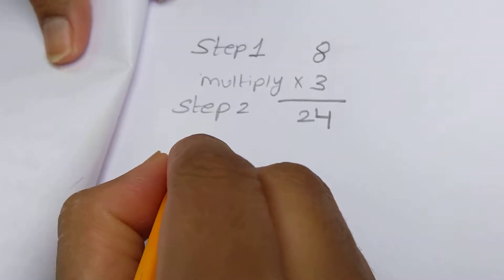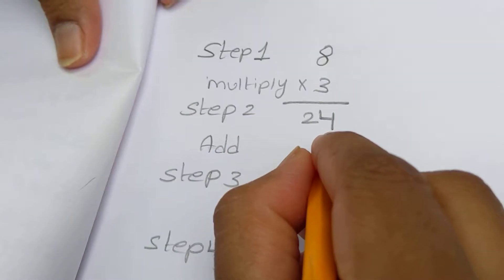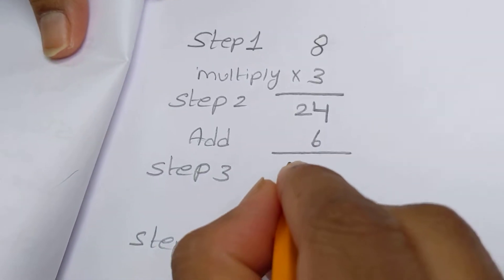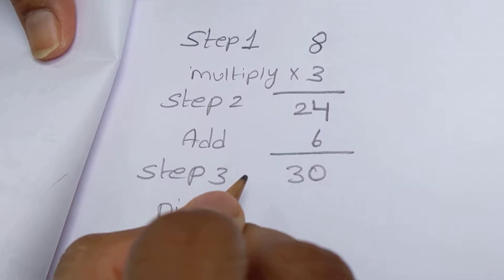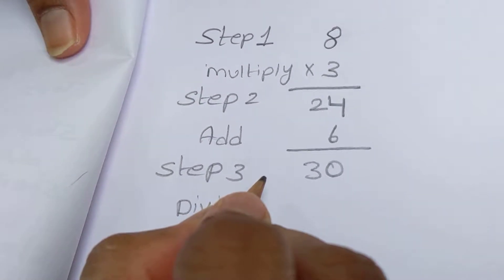Step 3. Add 6 to the number that you got as your answer in step 2. Step 4. Divide your answer by 3.